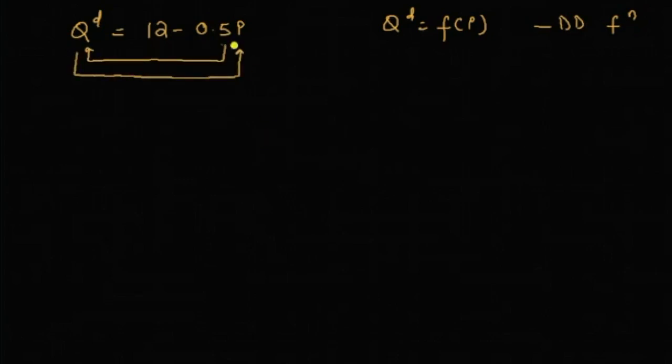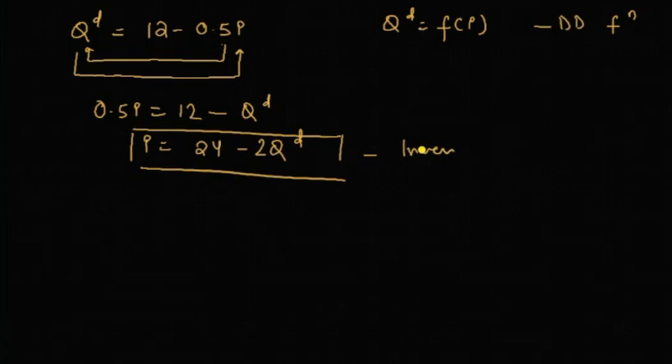Now let's suppose that we replace prices with quantity and quantity with prices—that is, we take an inverse of this function. The resultant function will be, after some manipulations, price will be equal to 24 minus 2 times Q. This inverted function is nothing but what is called an inverse demand function.